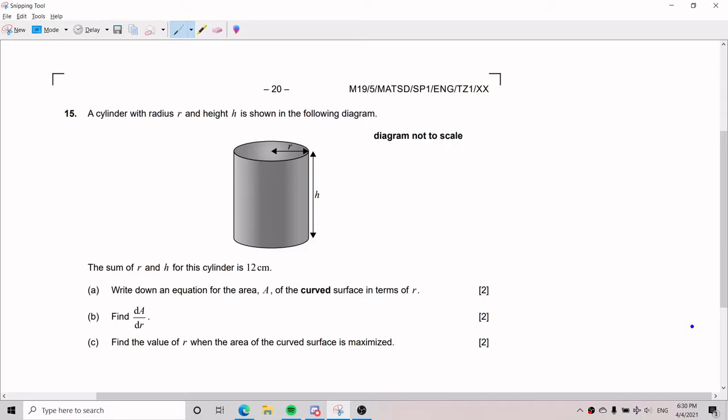The problem gives us a cylinder with radius r and height h as shown in the diagram. The sum of r and h for the cylinder is 12 centimeters. We write that down because we'll probably need it, so we just leave it here on the side and go on to the problem.